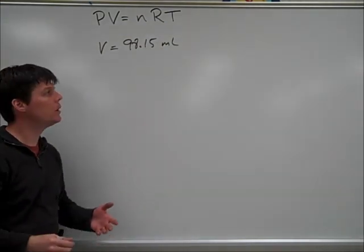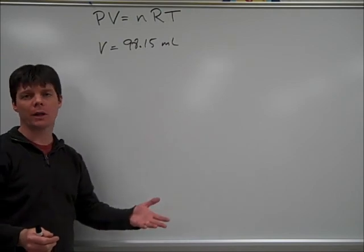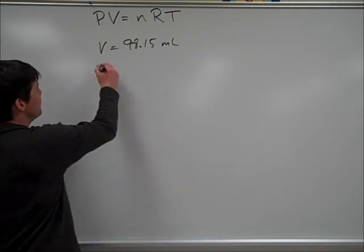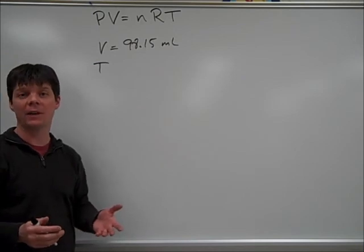We're also given a temperature that was 22.5 degrees Celsius. However, as always, we want to convert this to Kelvin. We found that the converted temperature was 295.65 Kelvin.